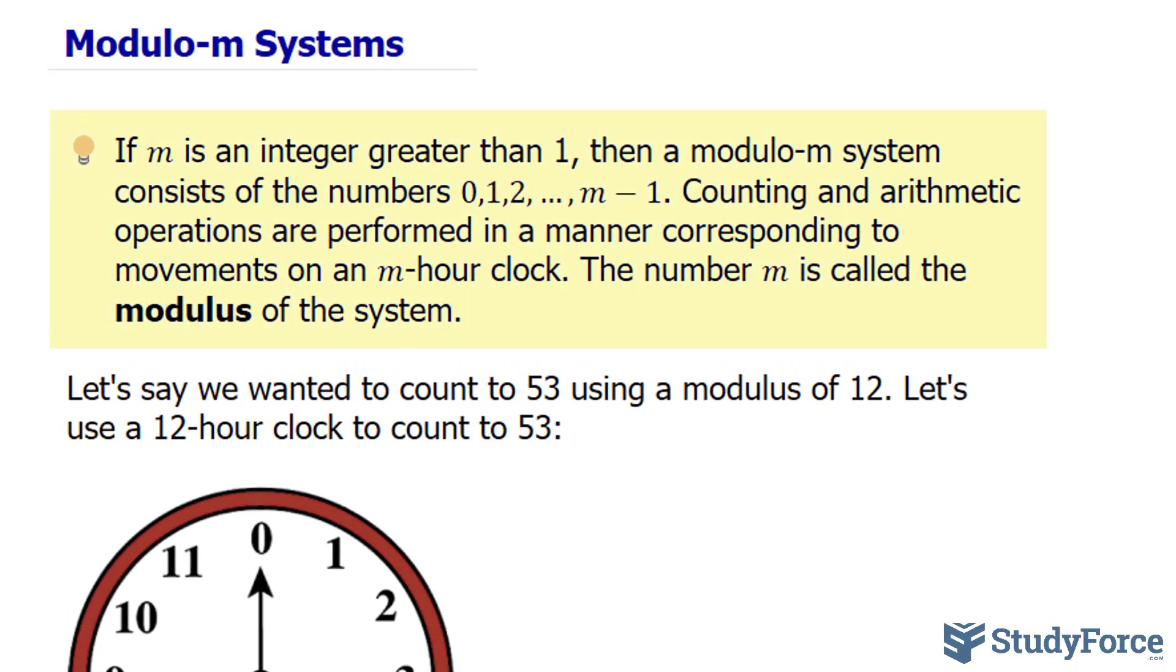If M is an integer greater than one, then a Modulo M system consists of the numbers zero all the way to M minus one. Counting and arithmetic operations are performed in a manner corresponding to movements on an M hour clock. The number M is called the modulus of the system.